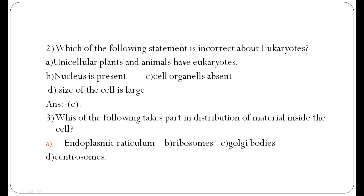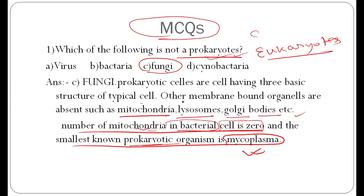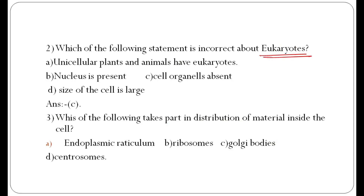Which of the following statements is incorrect about eukaryotes? The statements are: unicellular plants and animals have eukaryotes; nucleus is present; cell organelles are absent; and the size of the cell is largest. In eukaryotes, other membrane-bound organelles such as mitochondria are absent.